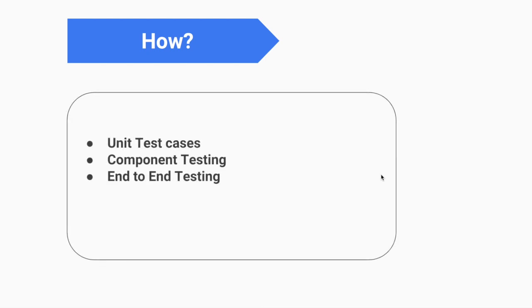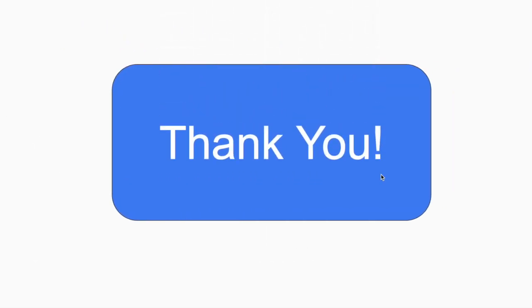How are we going to implement TDD in our React Native project? We will write unit test cases, which are independent of React Native code and used to test functions and plain JavaScript objects. We have component testing to test React Native components. And last but not least, end-to-end testing, which helps us test the whole app from start to end. These three things will be covered in the next three chapters. That's all about the introduction to TDD — thank you for watching.